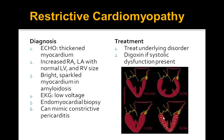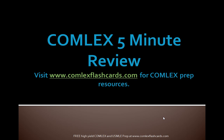Treatment involves first treating the underlying disorder — if the patient has hemochromatosis, sarcoidosis, or amyloidosis, address that condition. Digoxin can be used if systolic function is impaired. It was discussed for dilated cardiomyopathy and can also be used for restrictive cardiomyopathy. More resources are available at comlexflashcards.com.